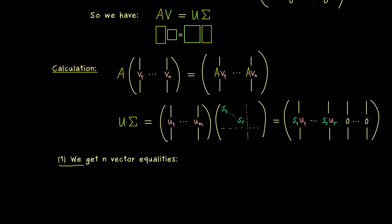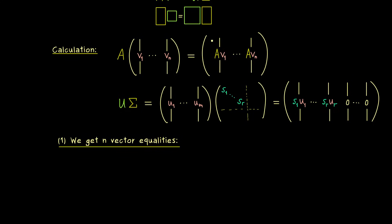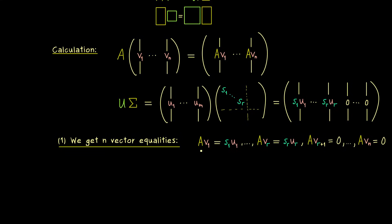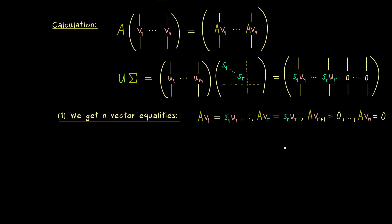With that we get our first result: N vector equalities, because the two matrices have to coincide. The first equality is A·V1 = S1·U1, and this repeats until index R. The next vector equalities then have the zero vector on the right-hand side. So the last equalities tell us something about the kernel of A, and the first ones look like eigenvalue equalities — although it is not the same, because we don't have the same vector on the left and right. We do have scalars involved, and we will see these are connected to eigenvalues of a particular matrix.